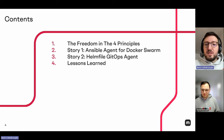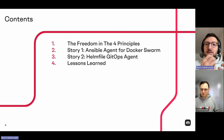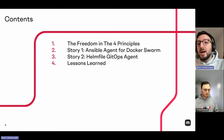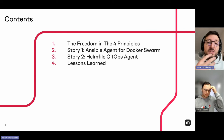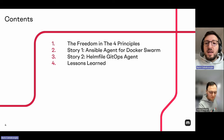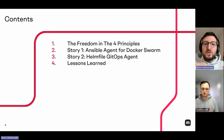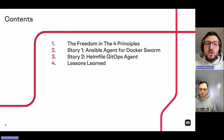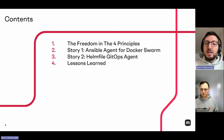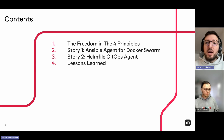The contents of this talk cover first the evaluation of the four GitOps principles — what the four principles are about, what freedoms they give us, and what the myths of the four principles are. Then we show our first story with an Ansible agent and Docker Swarm, then our story about a Helmfile used as a GitOps agent, and finally our lessons learned.